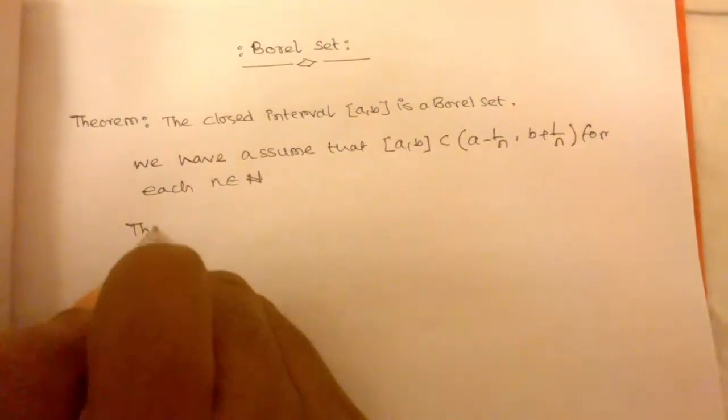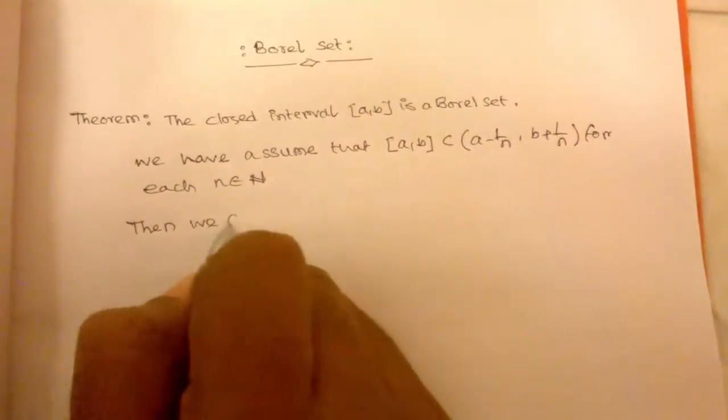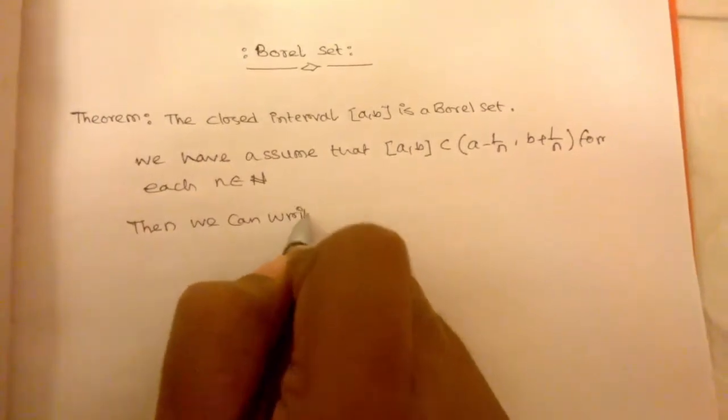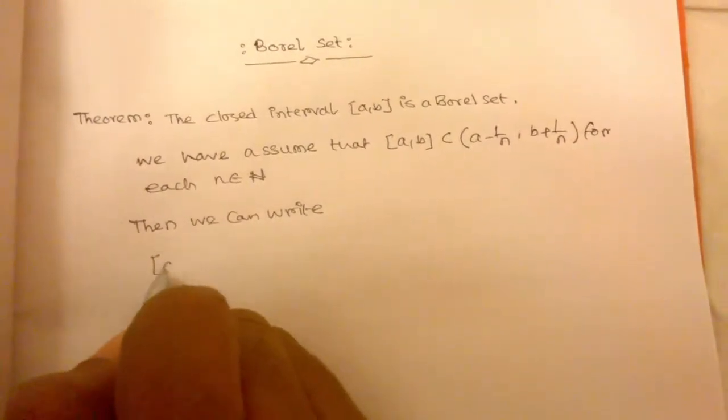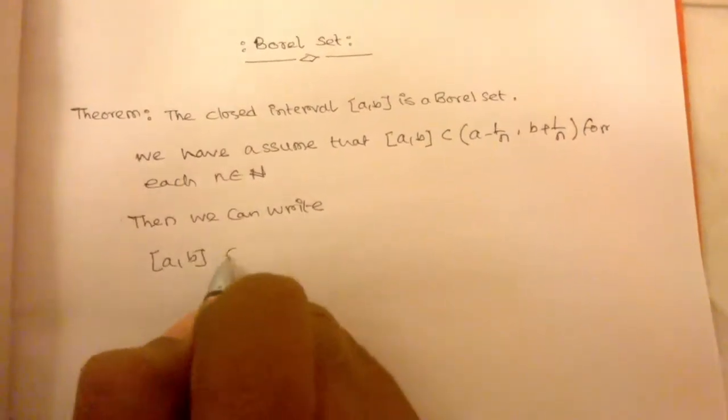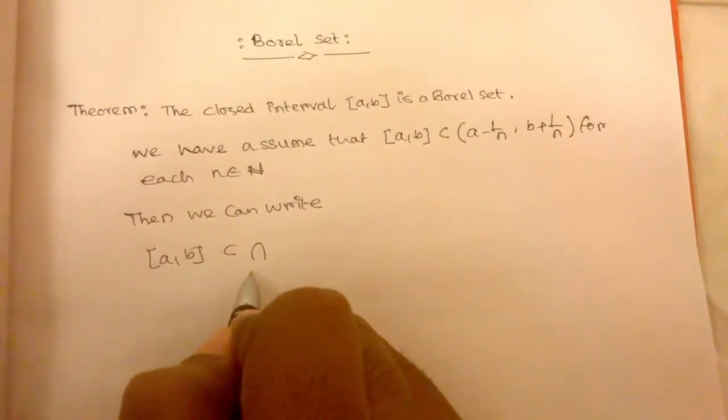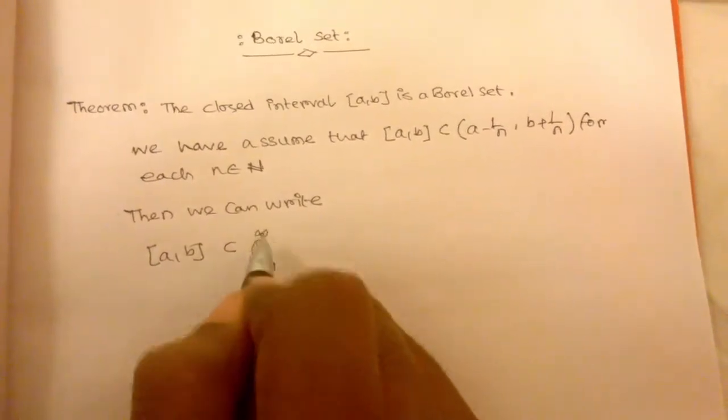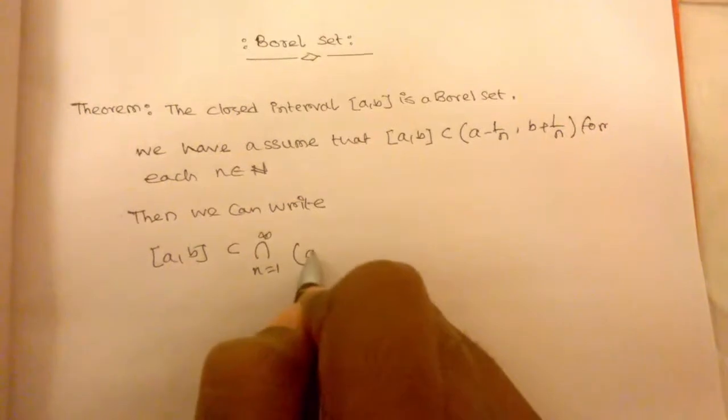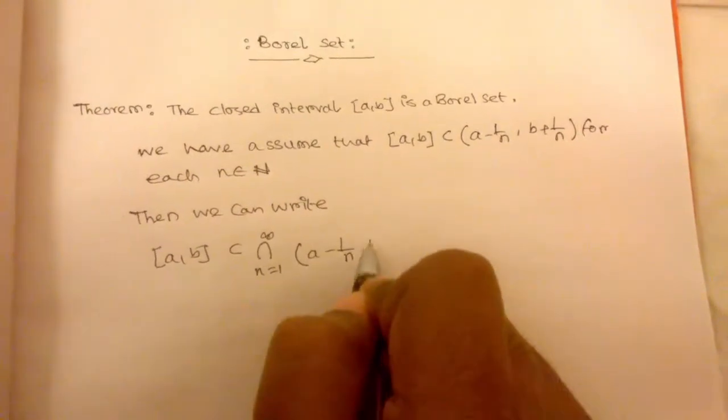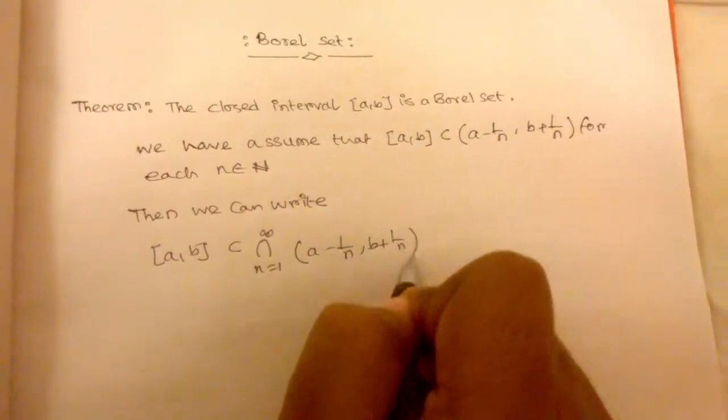Then we can write closed interval [a,b] is a subset of the intersection from n equals 1 to infinity of (a - 1/n, b + 1/n).